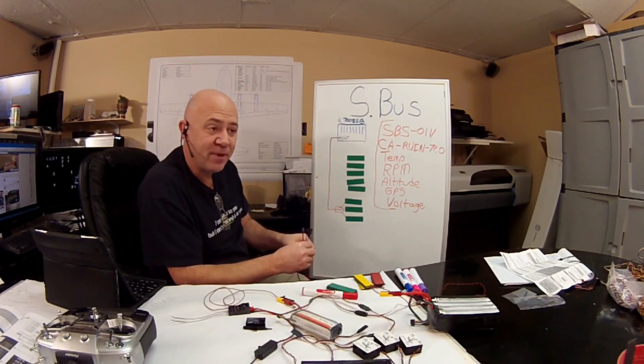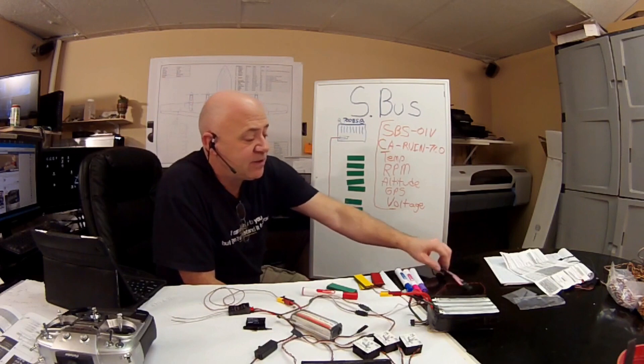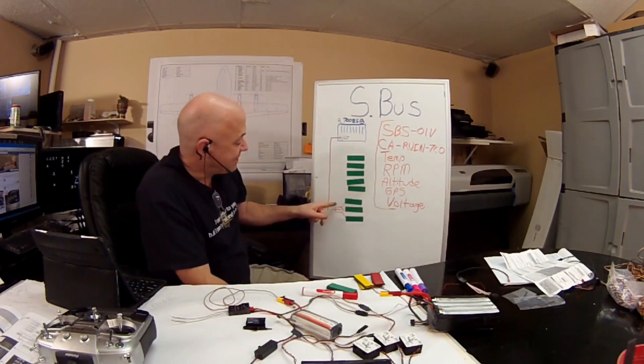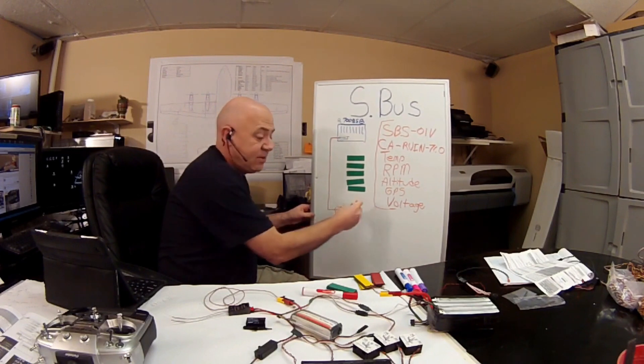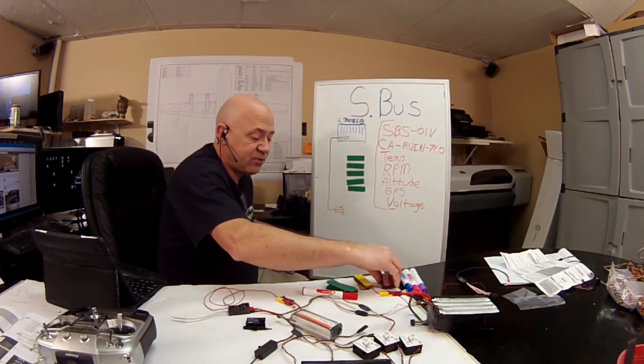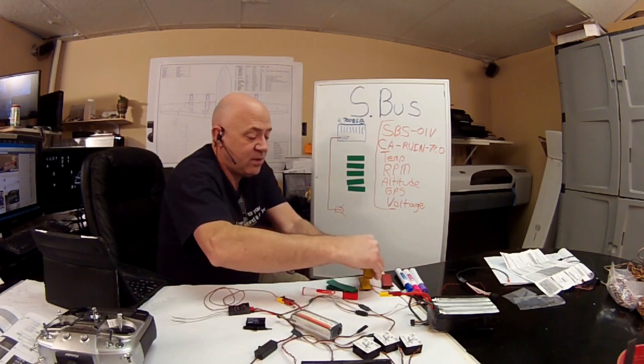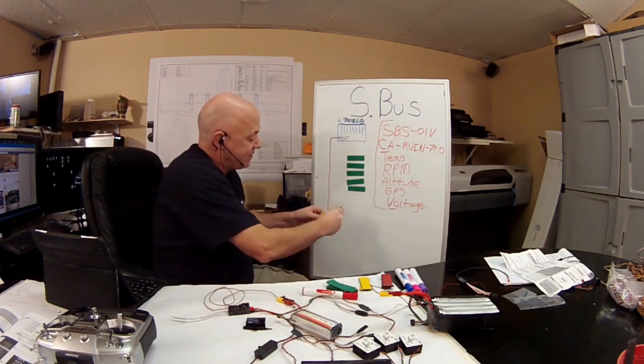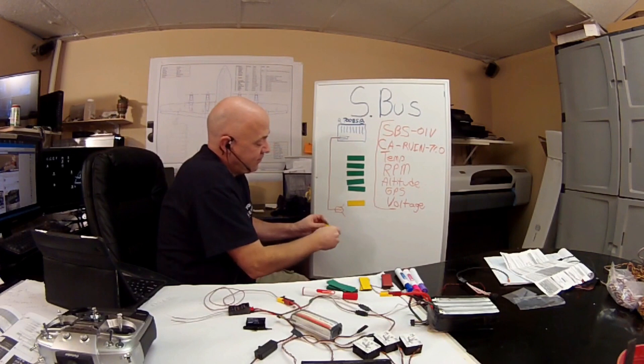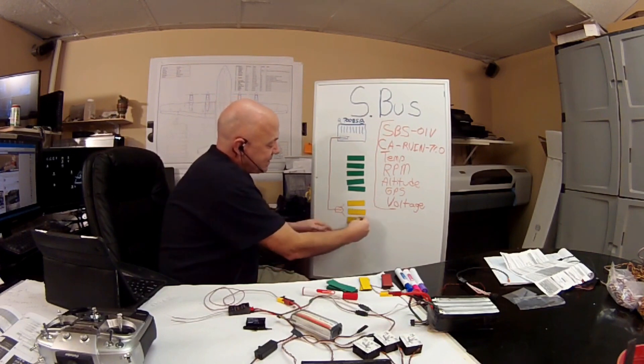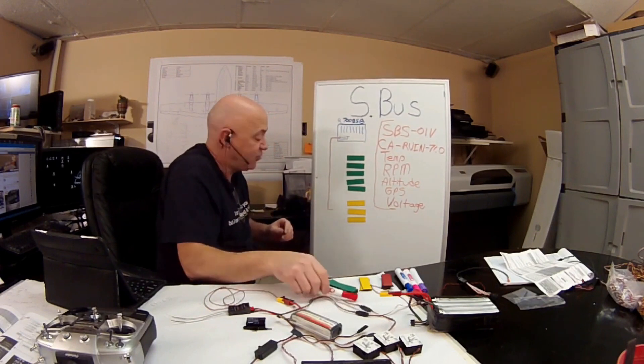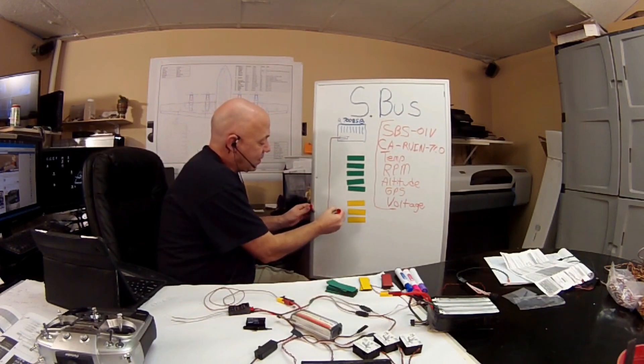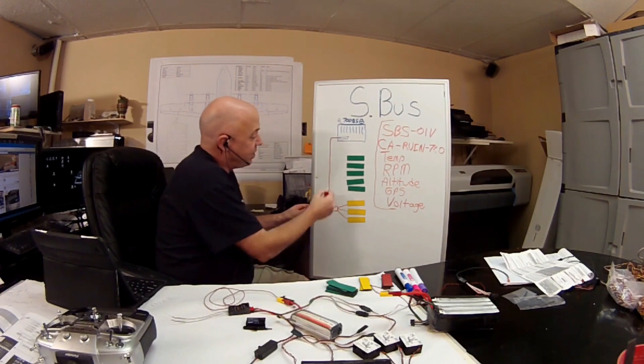Now let's say these were not standard servos but let's use yellow, these are SBUS servos. So if these were SBUS servos, essentially you're going to run to a hub or like a Y and you are going to just plug it directly in.